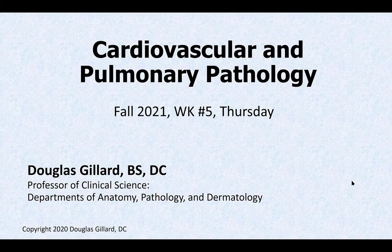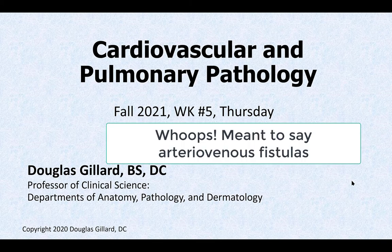Hi guys, Dr. Gillard here. Let's do our CVPP lecture for today. It's Thursday, week 5, fall 2021. I'm doing this from home — I have a bad cough, but if I do it this way, at least I can edit out the coughs. Today we're going to talk about the circle of Willis, and more importantly, we're going to talk about berry aneurysms, which occur in the circle of Willis. We'll also talk quickly about something called arteriovenous anastomosis, which is rare, but it can be big trouble.